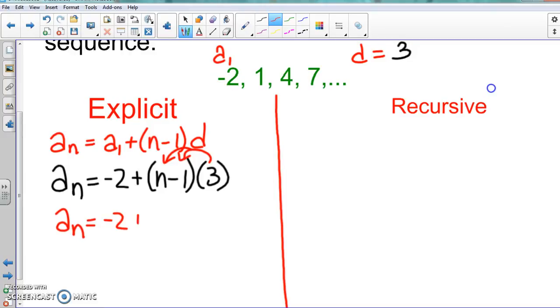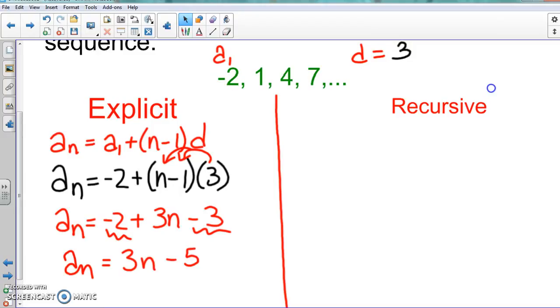Again, distribute that. We get -2 + 3n - 3. And then we combine like terms.